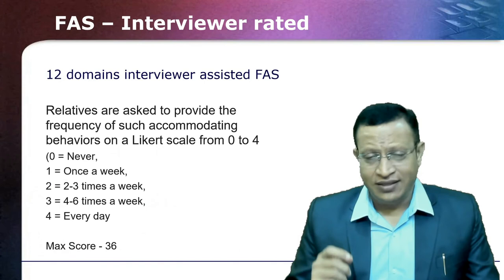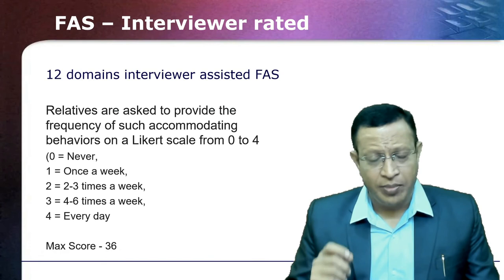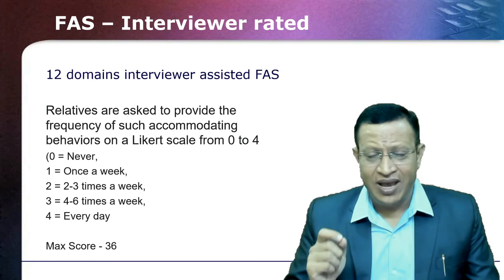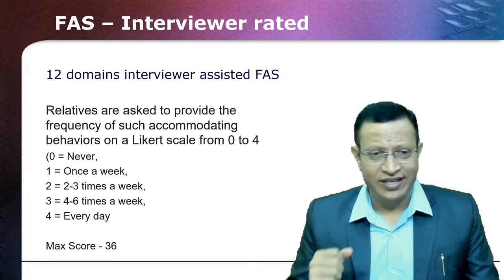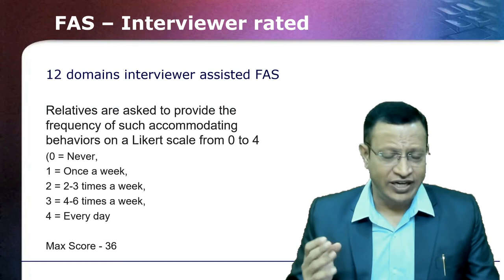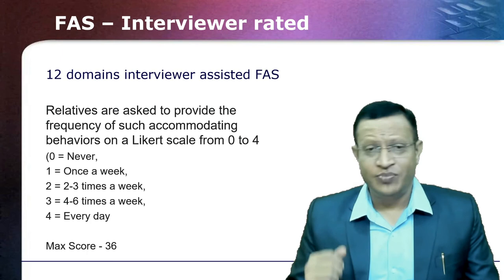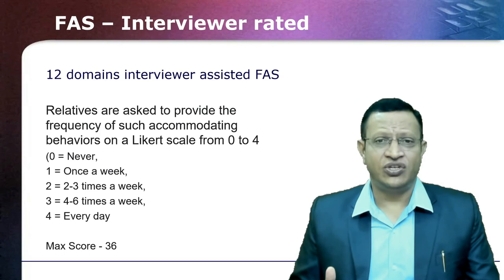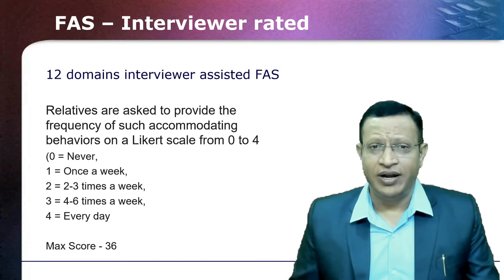There is also the Family Accommodation Scale done by the interviewer — a 12-domain interview rating scale where relatives are interviewed by the clinician or mental health professional. Ratings: 0 means never, 1 means once a week, 2 means 2 to 3 times a week, 3 means 4 to 6 times a week, 4 means every day, and maximum score is 36. The higher the score, the more severe the family accommodation. When family accommodation is severe, it means not only does the patient require OCD medication and therapy — family therapy is also required and family accommodation needs to be addressed at the earliest.